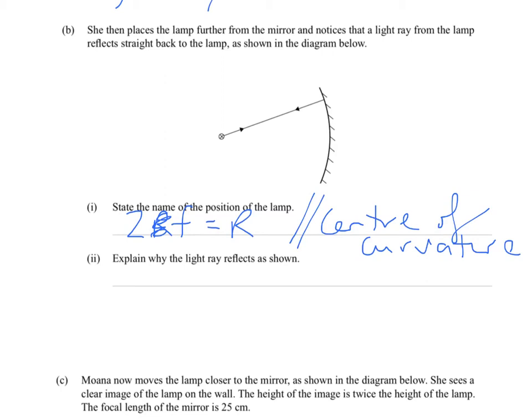And explain why the light ray reflects as shown. It's because it's traveling directly along the normal. So if you imagine if you continue the circle all the way around that's the radial distance. It's going to strike the surface at a right angle. So the angle of incidence is going to be equal to zero degrees. And therefore the angle of reflection is going to also equal zero degrees. That's why it travels right back in the same direction that it's come from.